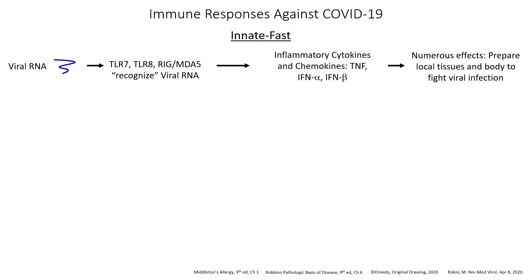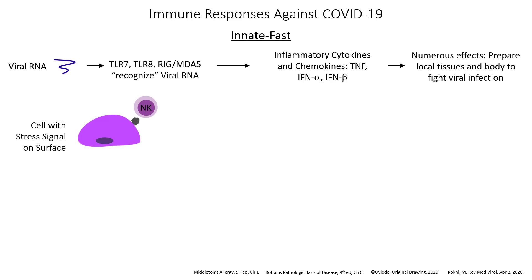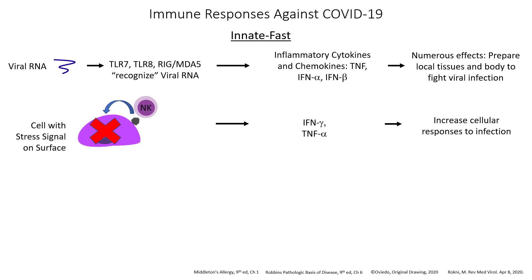This will have numerous effects, including preparing local tissues and the body to fight the viral infection. Another innate immunologic reaction is mediated by the NK cell, which is a type of lymphocyte. The NK cell will recognize the stress signal and then can kill the infected pneumocyte. This can also produce interferon gamma and TNF alpha, which will increase cellular responses to infection.